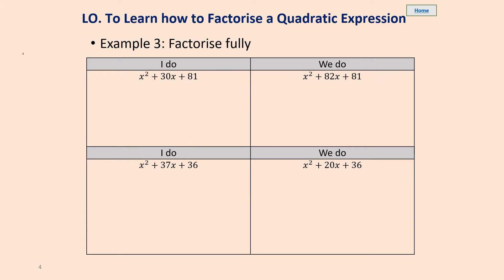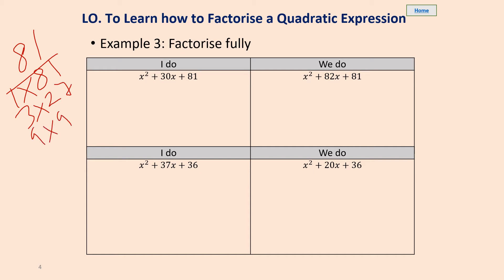So we're looking at the factors of 81: 1 times 81, 3 times 27, 9 times 9. We're now looking at which two numbers are going to give us 30. 1 and 81 is not going to give us 30. 9 gives us 18. 3 plus 27 is going to give us 30. So that will be (x + 3)(x + 27). When we multiply that out we're going to get x squared plus 30x plus 81 when we've collected the terms.